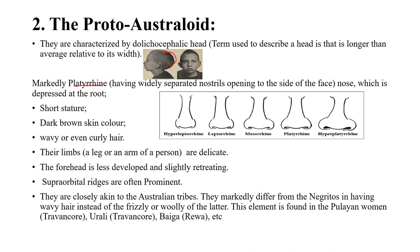They are also characterized by platyrrhine — that is, widely separated nostrils opening to the side of the face, which is depressed at the root. It is much wider. Stature is very short, skin color is dark brown, and hair is wavy and curly. Limbs — that is, the legs and arms — are delicate.